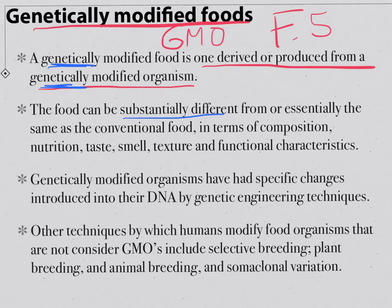The definition says the food can be substantially different or essentially the same as the conventional food in terms of composition, taste, smell, texture, and all of those things. So now, starting to look down here, we're getting a little bit better explanation of what genetically modified organisms are.